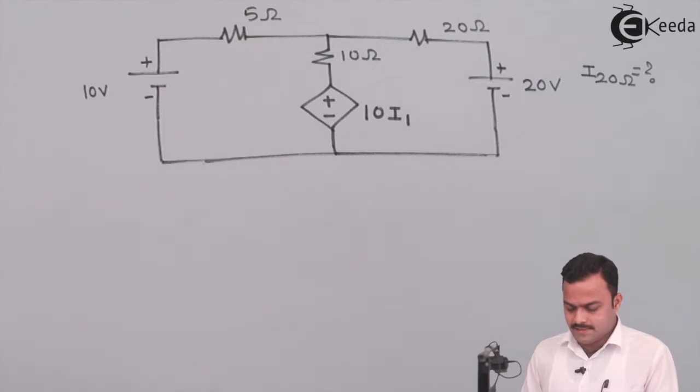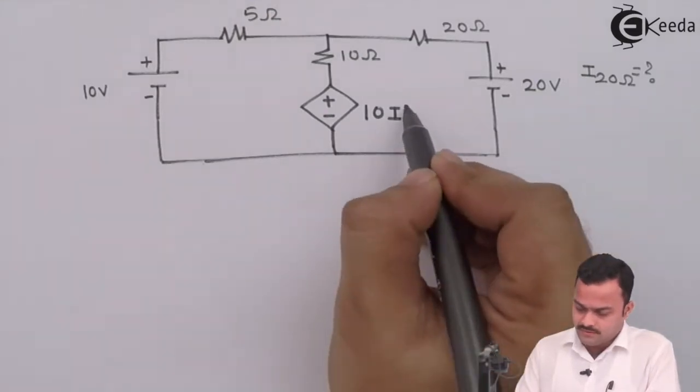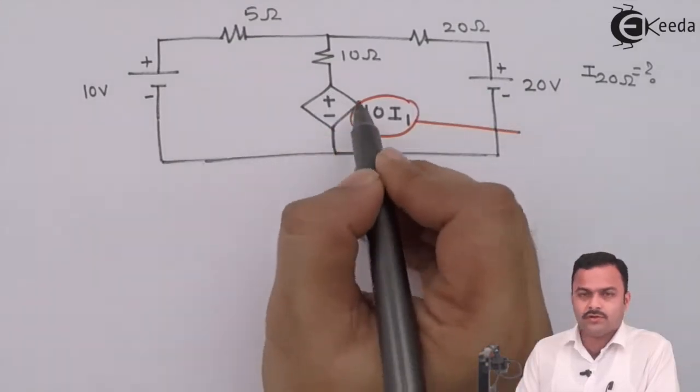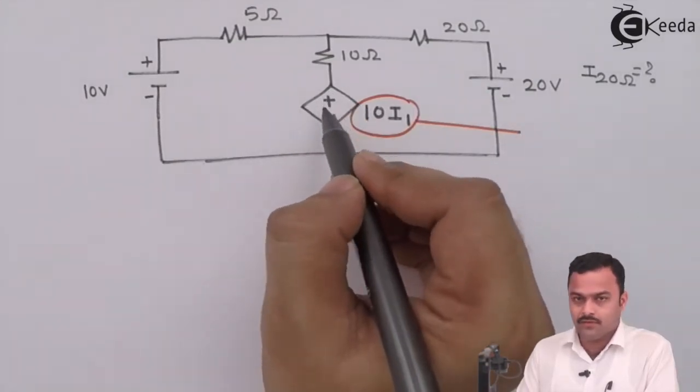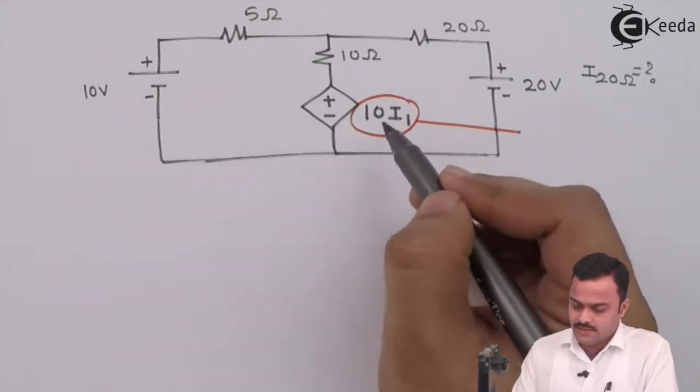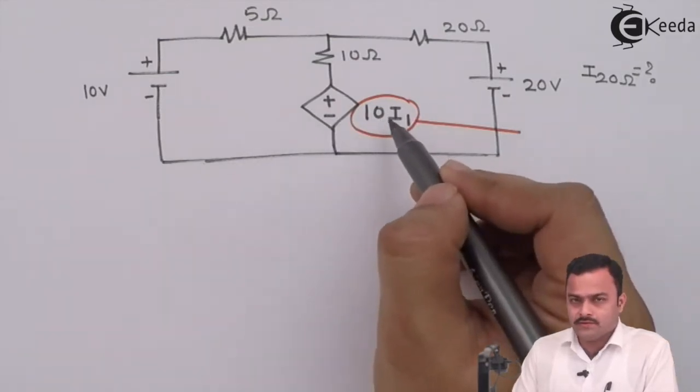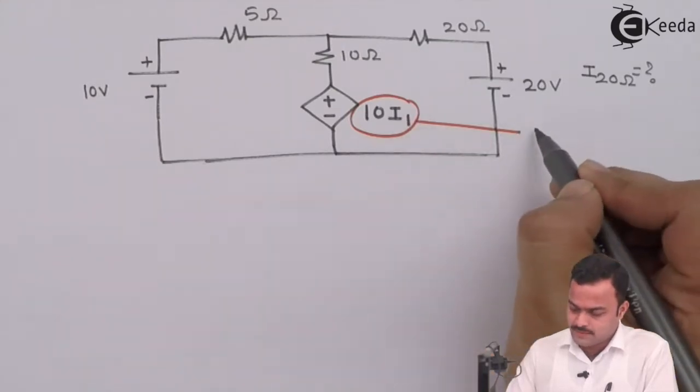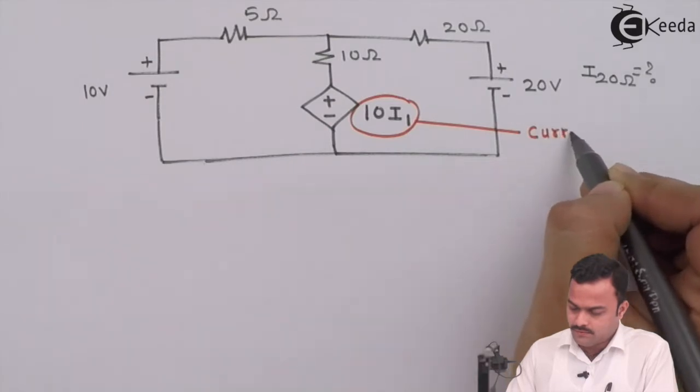Now the thing is that over here 10i1 is a voltage source. If you see the symbol it's having a polarity, so it's a voltage source, but its value is 10i1 so it depends upon the current i1. So we call this a current controlled voltage source.